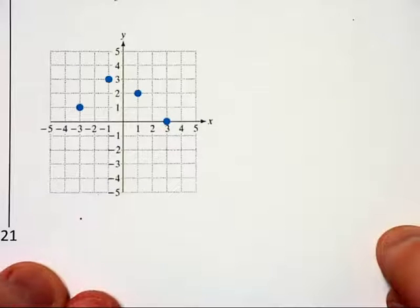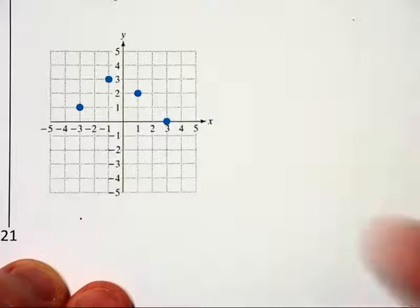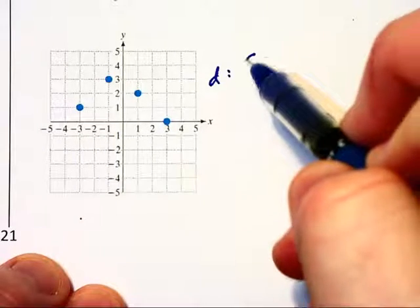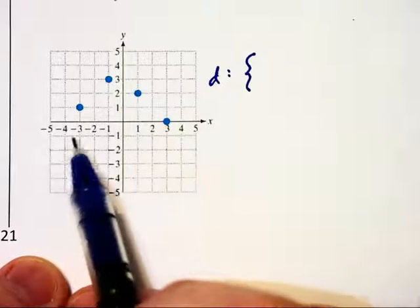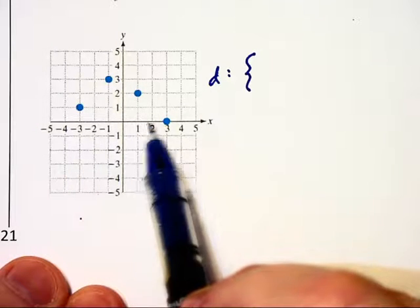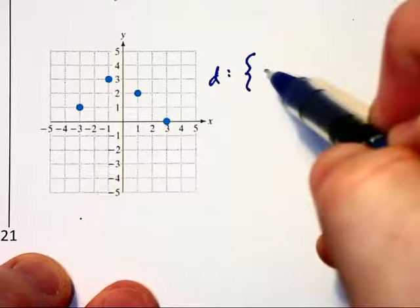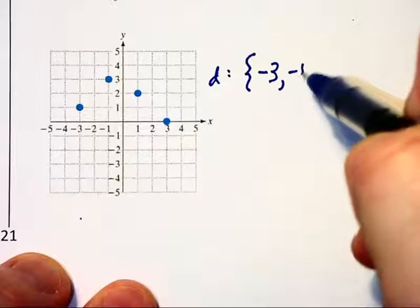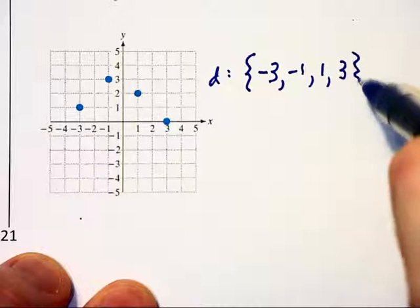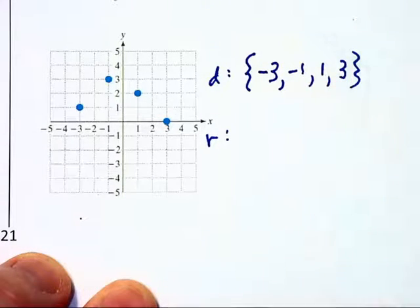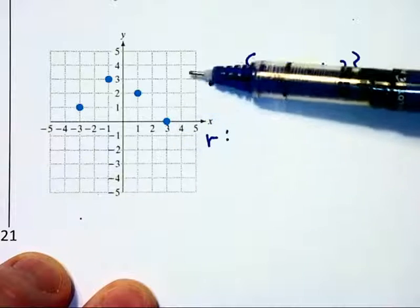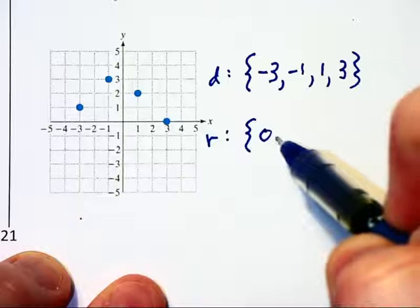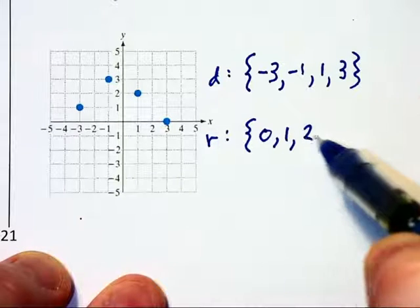This graph is just a collection of points. And so if we're listing out the domain, we can't list it as an interval. Instead, we have to use set notation and we look at the different x values that are taken on by these points. And so the domain will be the set containing negative 3, negative 1, 1, and 3. Likewise, the range is going to be just 4 y values that are assumed by this graph. And I'm going to put them in numerical order: 0, 1, 2, and 3.